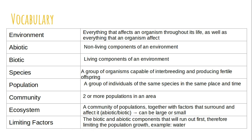Species — and it's very important you know this definition — are animals that can interbreed and produce fertile offspring. For example, a donkey and a horse can mate and produce a mule, but that mule is not fertile and will not reproduce, so they are not the same species. A population is a group of the same species in the same place and time; a community is a couple of populations together; an ecosystem is all the communities together plus abiotic factors. Limiting factors are the abiotic and biotic components that interact and stop populations from getting out of control. Pause and get these in your notes.